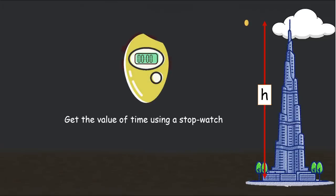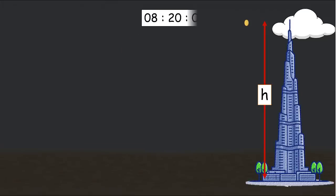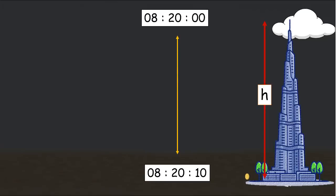Now, if you are thinking very practically that it's difficult to operate a stopwatch for such a large building, then I would say while dropping the coin capture the exact timestamp in a digital clock. And your friend on the ground can capture the exact time at which the coin touches the ground. The difference would give you the time taken to cover the distance h.